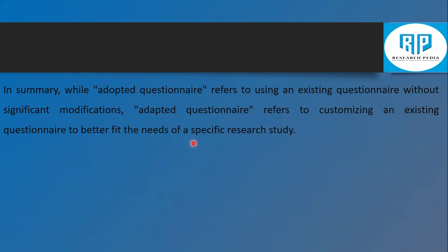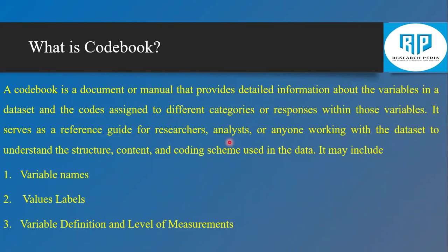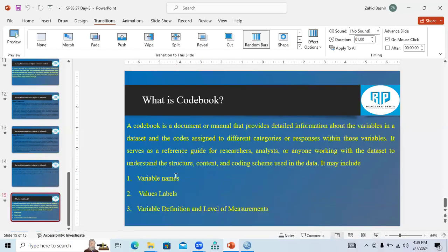The next important topic is the codebook. A codebook is a manual that provides detailed information about variables in a dataset and the codes assigned to different categories or responses within those variables. It serves as a reference guide for researchers or analysts to understand the structure, content, and coding scheme of the data, including variable names, value labels, variable definitions, and level of measurement.